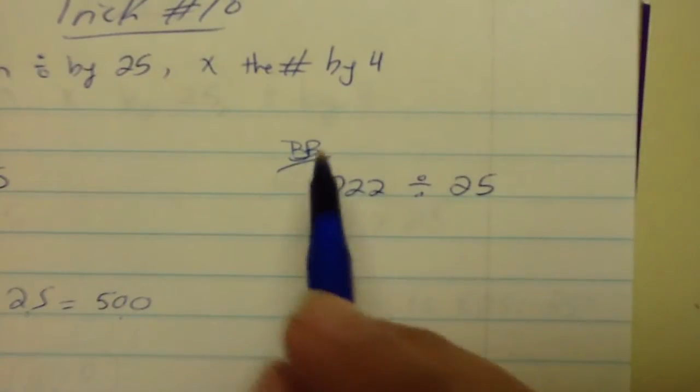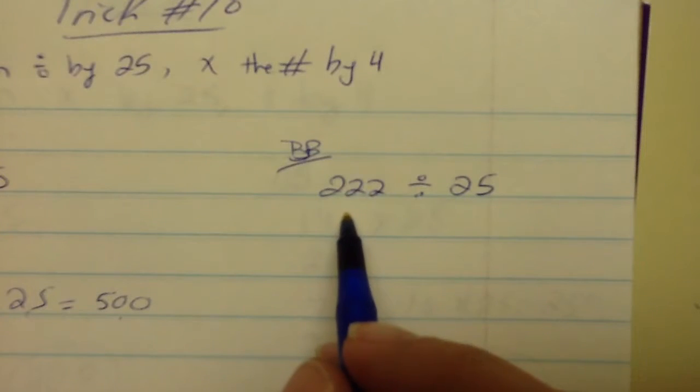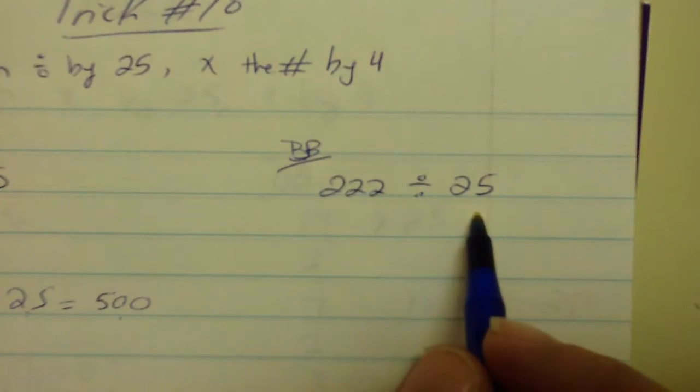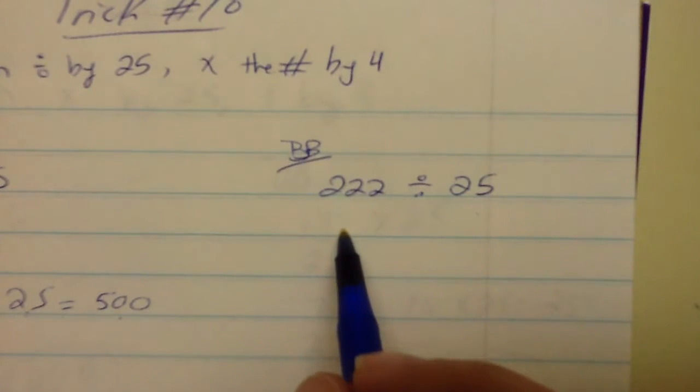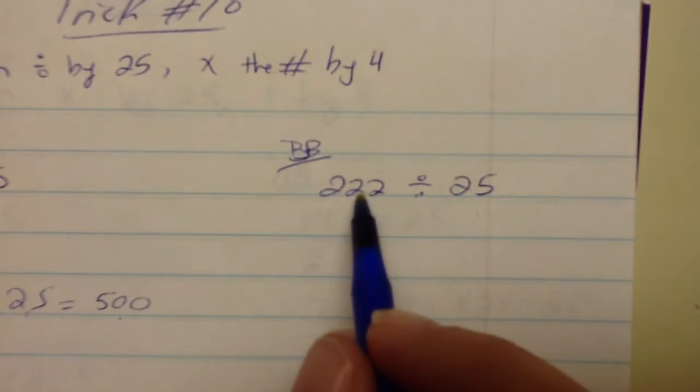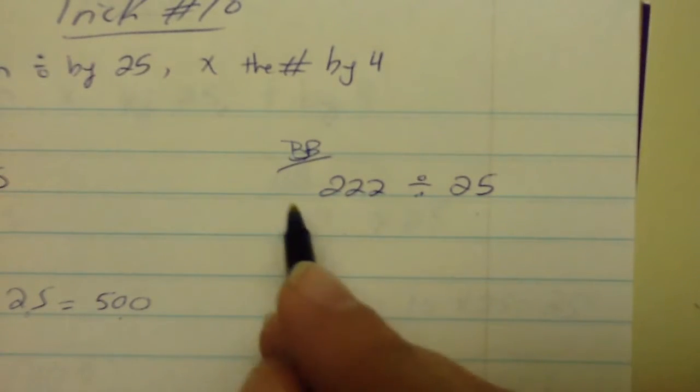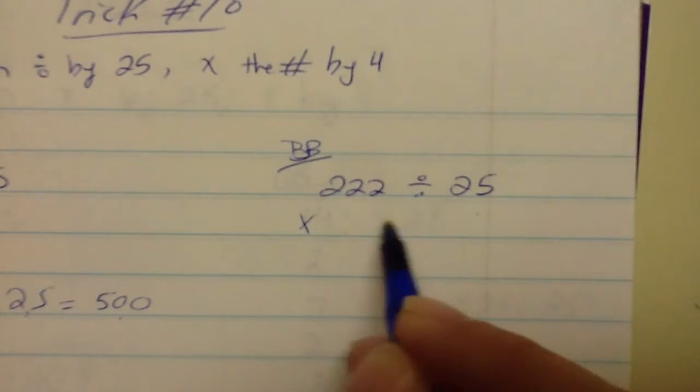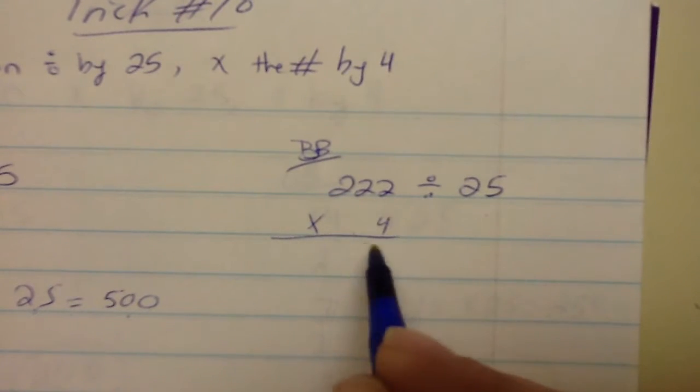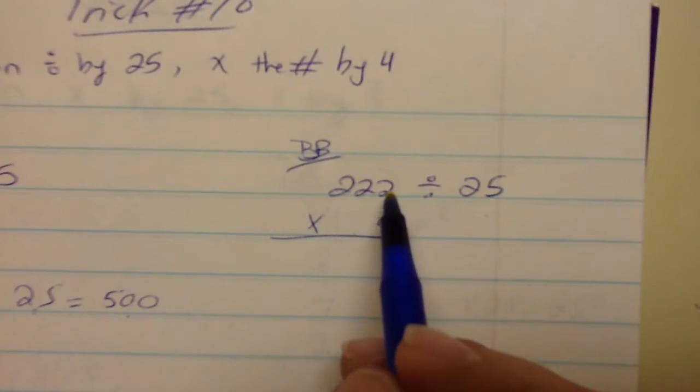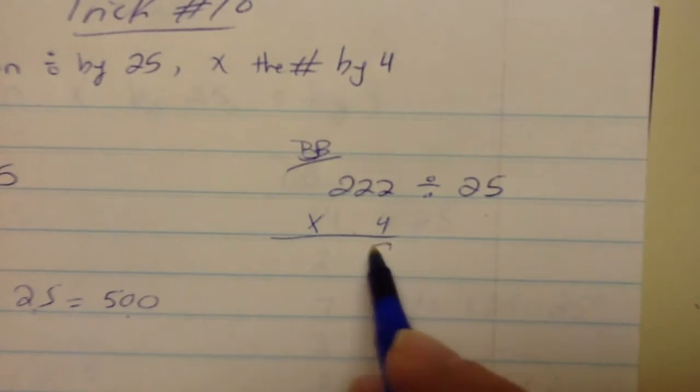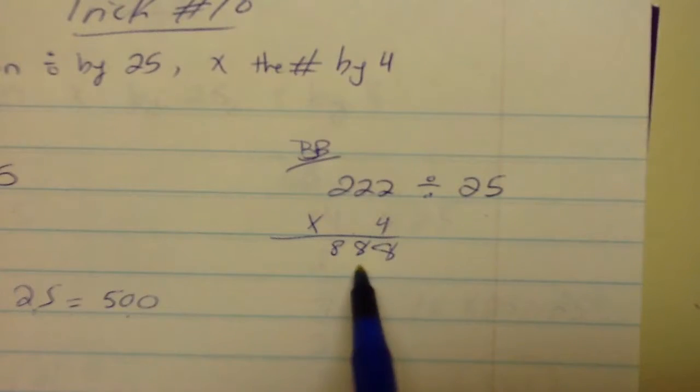So, doing a little bit more difficult one, 222 divided by 25. This one's a little bit more difficult because to do 222 times 4, you just have to do a little bit more math in your mind. Instead of doing it the long way, in your mind, I just think, okay, well, I know 2 times 4 is 8. Well, then I know 2 times 4 is 8 again, and 2 times 4 is 8 again. So that would be 888.